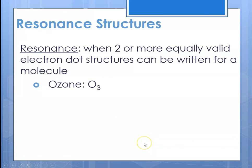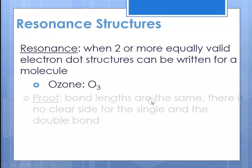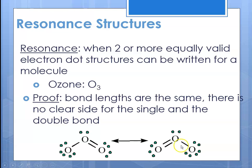We also talk about resonance structures. Any time you could draw two or more equally valid electron dot structures, it is said to be a resonance structure. Looking at ozone — three oxygens bonded together — the bond length is the same between all of the oxygens. Sometimes there's a single bond between two and a double between two others — the double bond is flipping back and forth. The way we know it's true is that the bond distance between all oxygens is the same. If you can draw two or more equally valid dot structures, that means it's resonance.